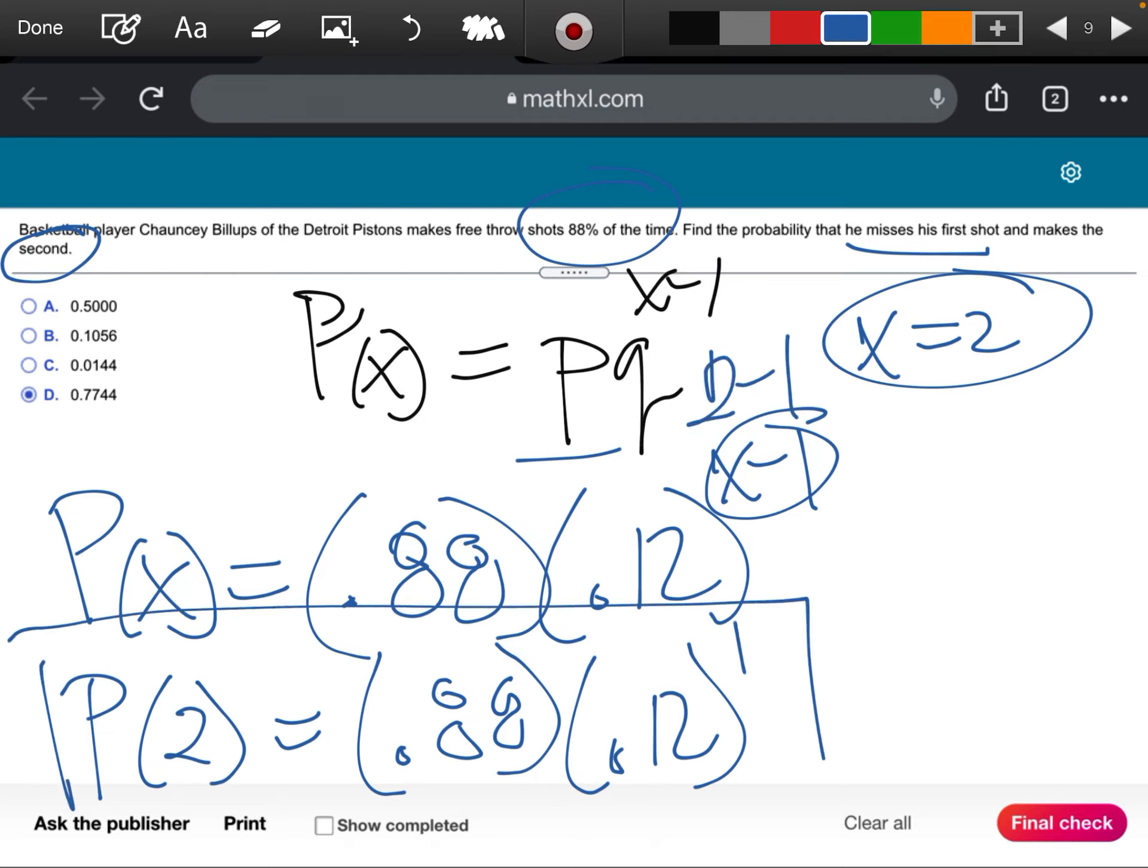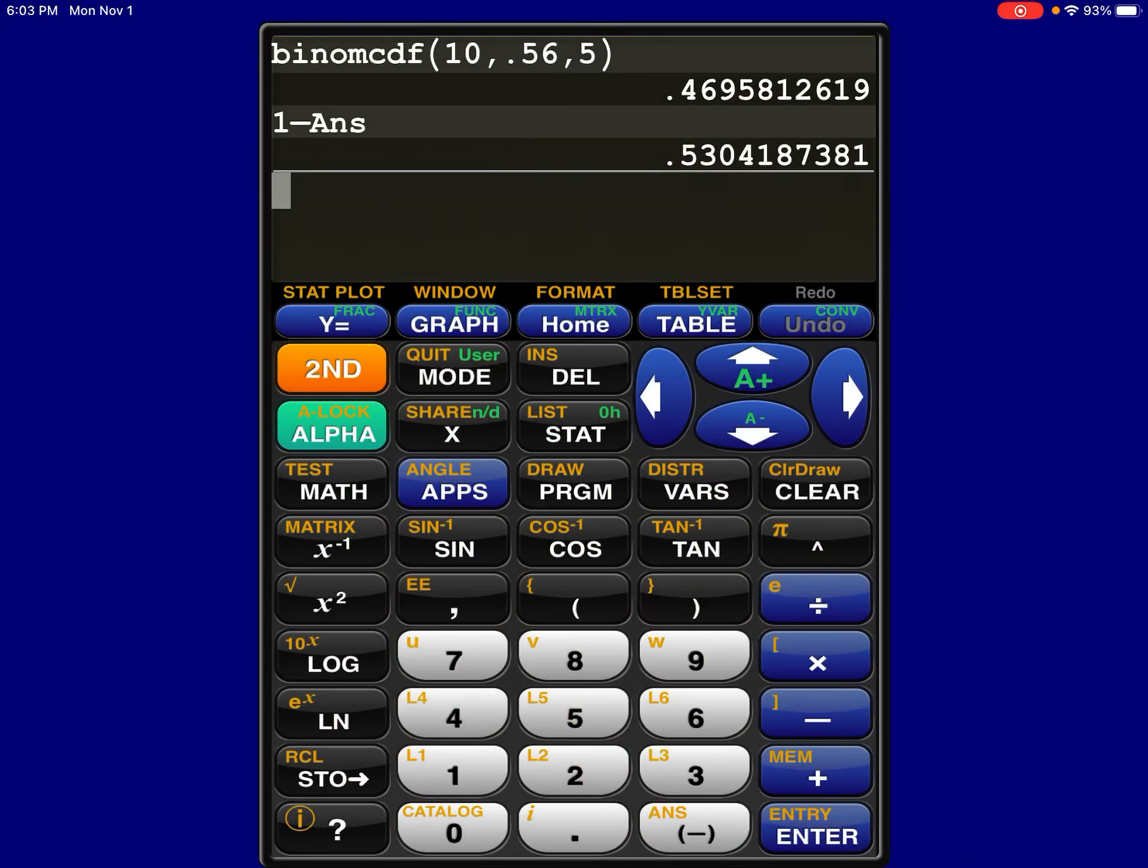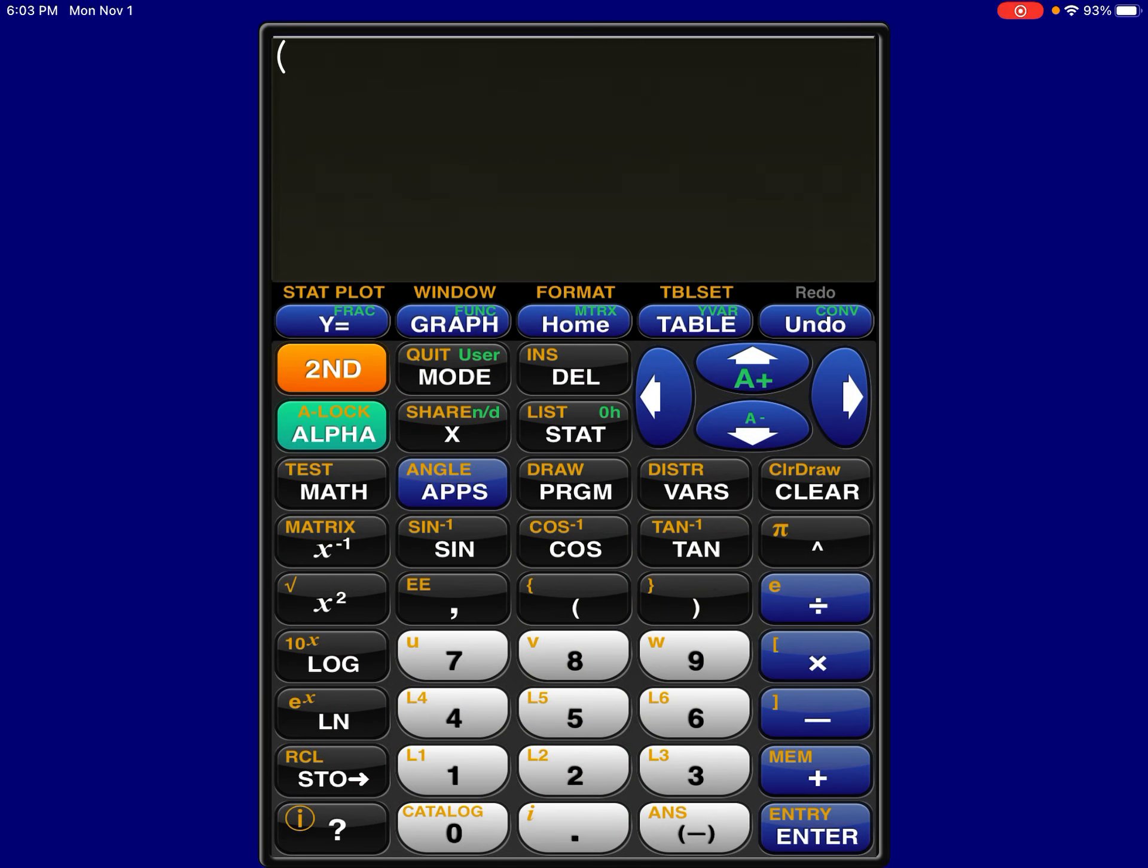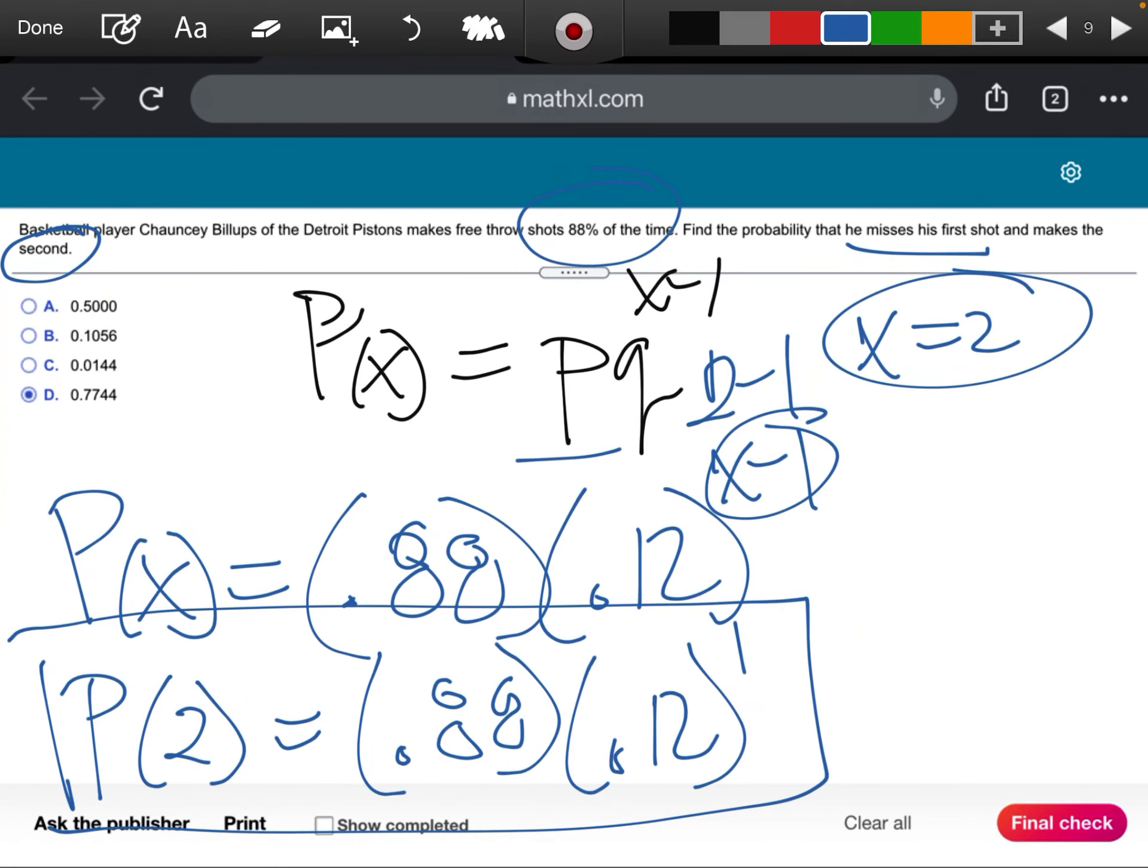Let me show you how I'm going to do this step on my calculator. Here it is. Let me clear all this out. I have parentheses 0.88 times 0.12 to the power of 1, close that off, and then hit enter. I'm coming up with 0.1056.